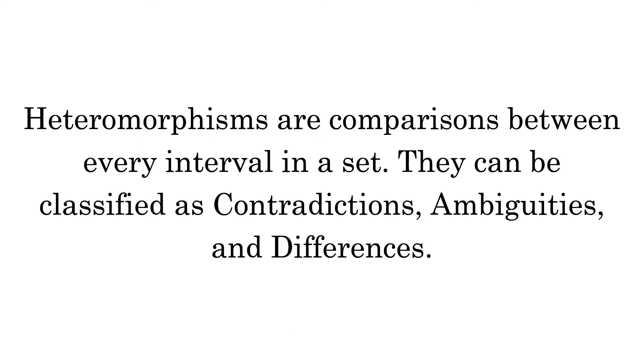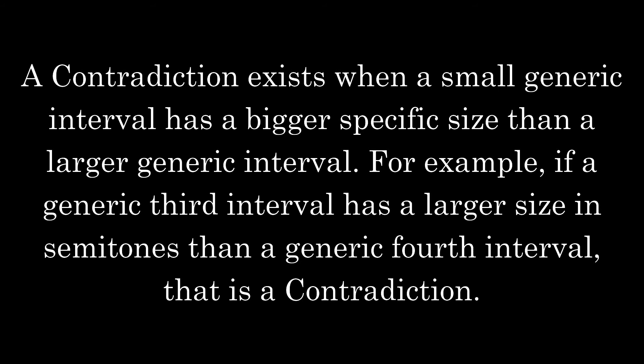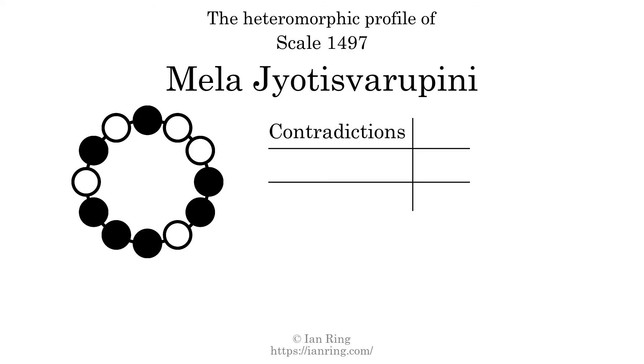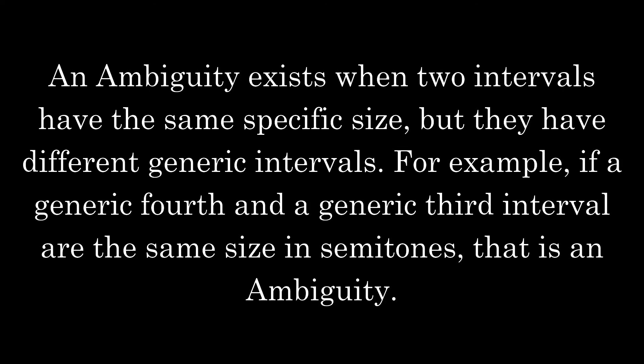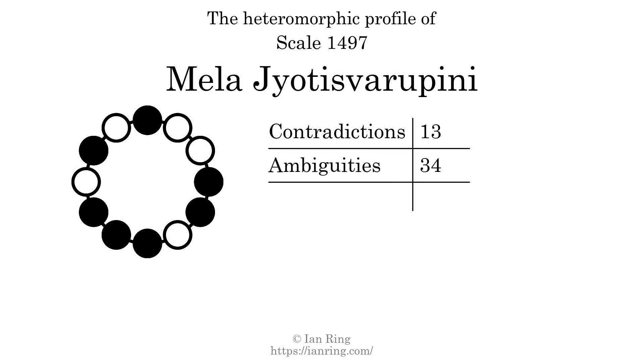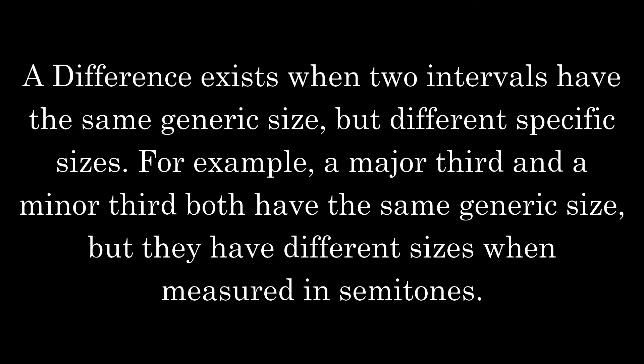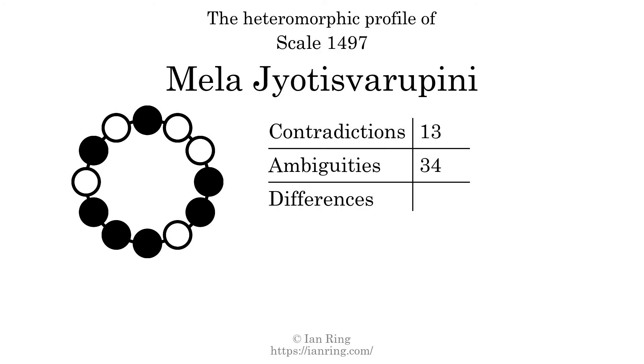Heteromorphisms are comparisons between every interval in a set. They can be classified as contradictions, ambiguities, and differences. A contradiction exists when a small generic interval has a bigger specific size than a larger generic interval — for example, if a generic third has a larger size in semitones than a generic fourth. The number of contradictions in this scale is 13. An ambiguity exists when two intervals have the same specific size but different generic intervals. The number of ambiguities is 34. A difference exists when two intervals have the same generic size but different specific sizes. The number of differences is 98.